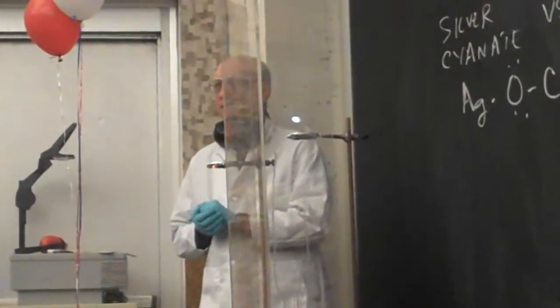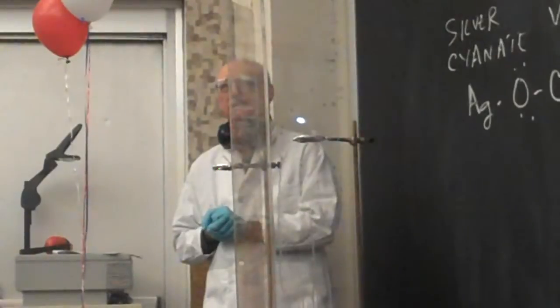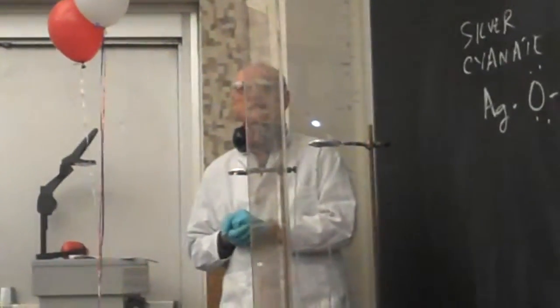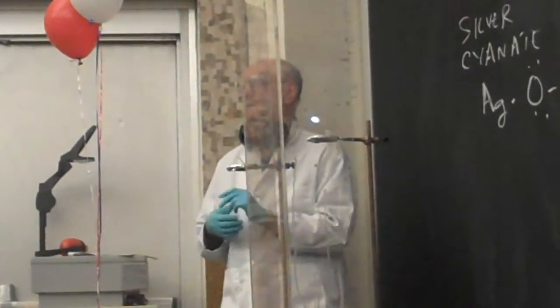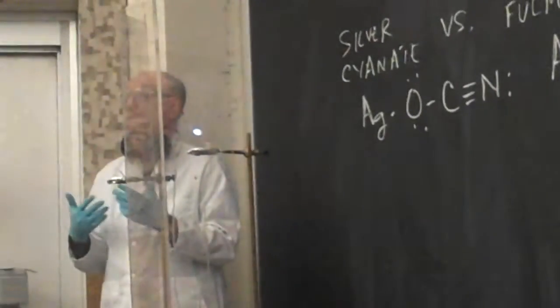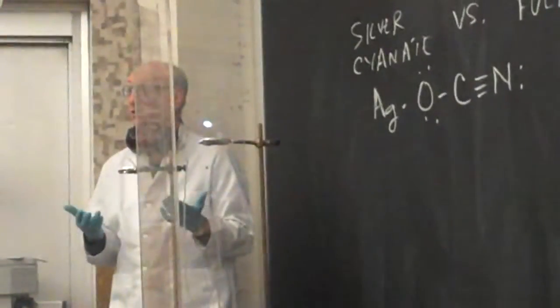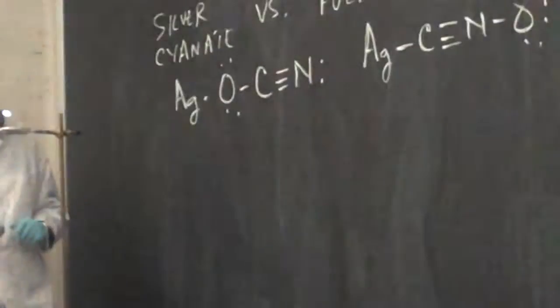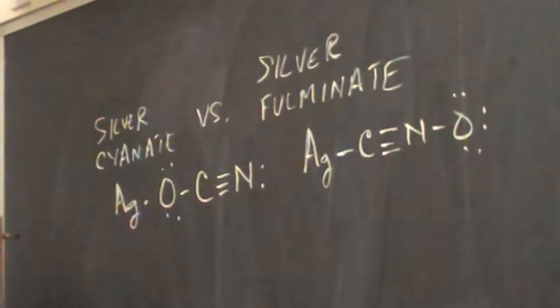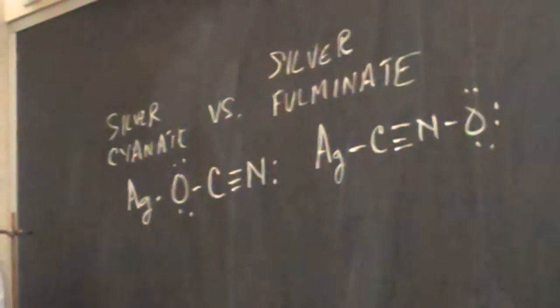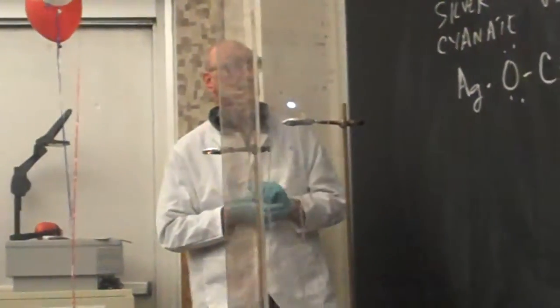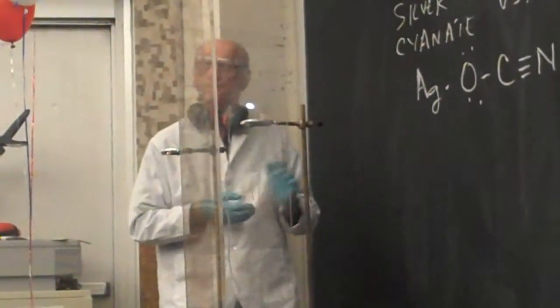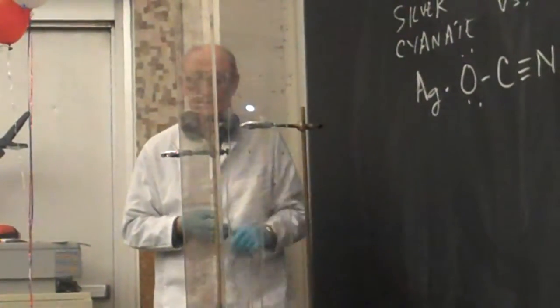The prevailing concept at the time was that compounds could only be different if they had different elemental compositions. It turned out that these two things had the same kind of composition. So what we usually like to do is illustrate the differences between different types of compounds such as this.